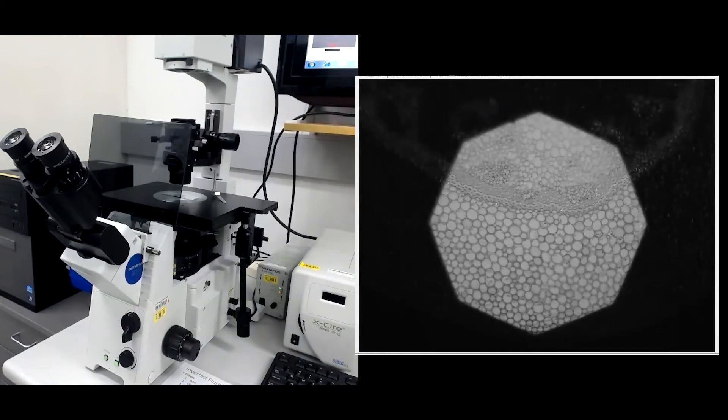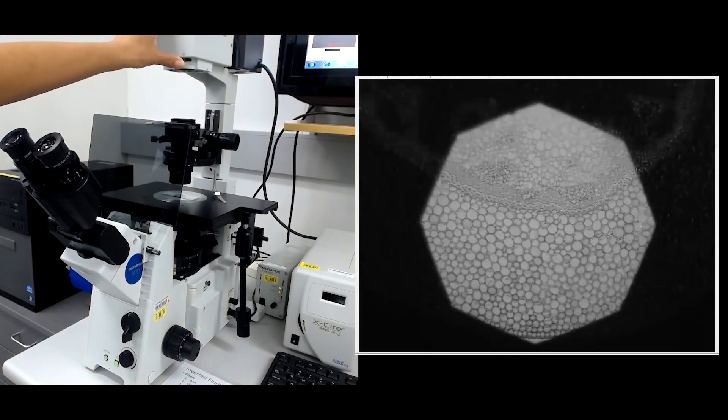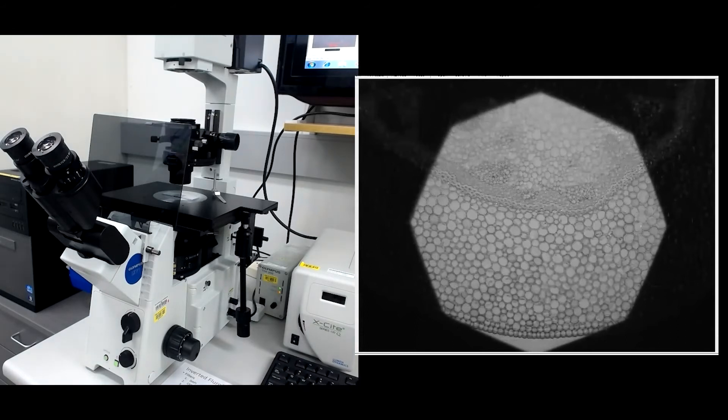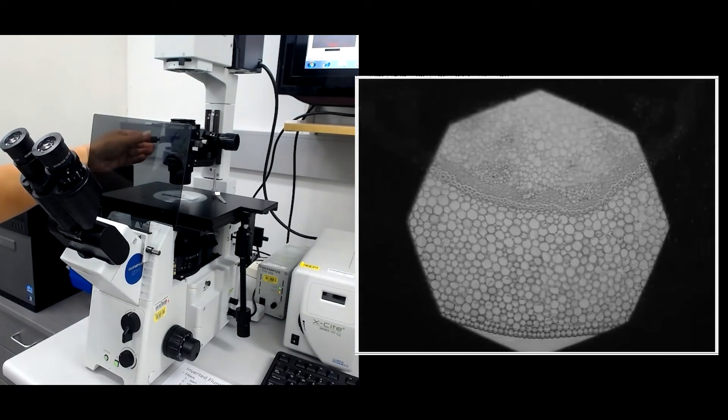To check the condenser is centered, open the field stop diaphragm lever until the edges of the polygon just touch the edge of the field of view. Then you may need to tweak the condenser focus and centering a couple of times just to get it right.